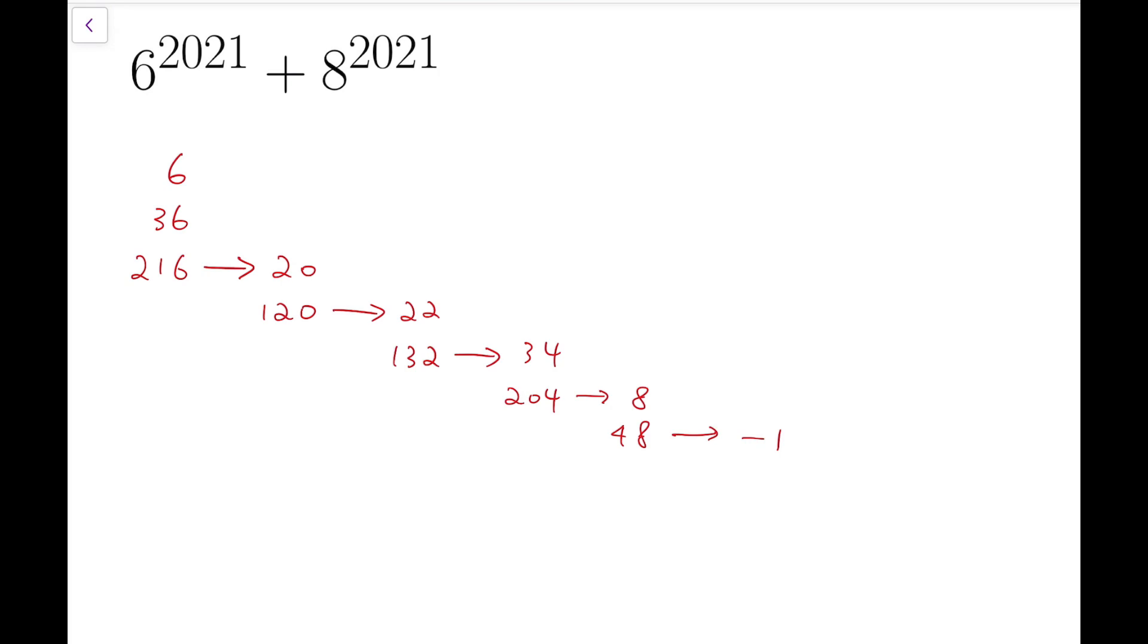So the pattern is that 6 to the power 7 is congruent to -1 mod 49. And so that means 6 to the power 14 must have remainder 1 when divided by 49. This is the smallest index where 6 to that power has remainder 1 when divided by 49.